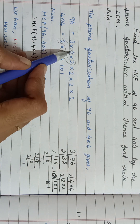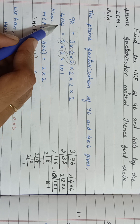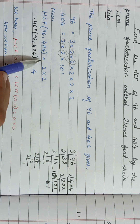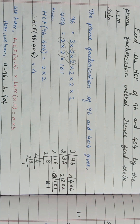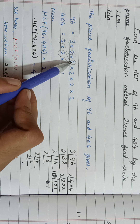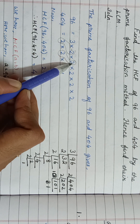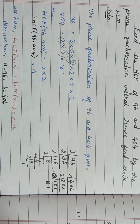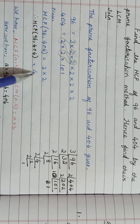Here the factor 2 is common in both 96 and 404, so from this set you write one 2. Then see if there is any other number that is common in both. Here another 2 is common in both. So from this set you write another 2. So you got 2 into 2, giving 4 as the HCF.